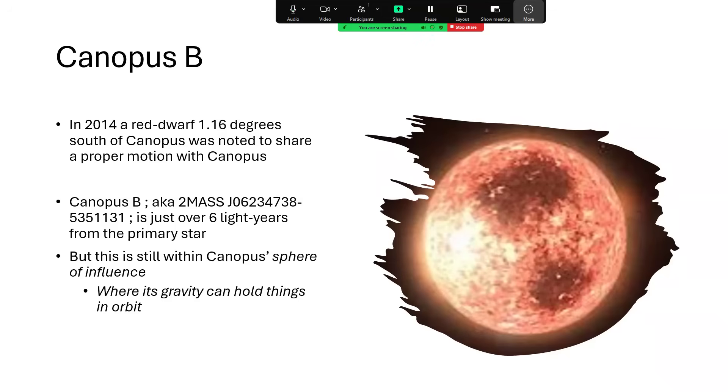And so Canopus B was identified in the two mass survey. And it's about six light years away from Canopus A, the primary main star, and that's a long way.